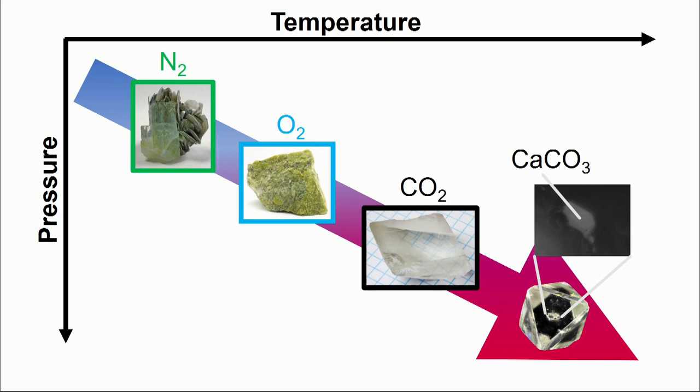What determines the potential of a mantle to keep or degas the volatiles is the stability of volatile-bearing minerals at extreme pressure and temperature conditions. Within the subduction plate, as it goes deeper and deeper, pressure and temperature gradually build up and volatile-bearing minerals turn unstable. They release the volatile elements into the mantle, which is the first step for their transport back into the atmosphere.